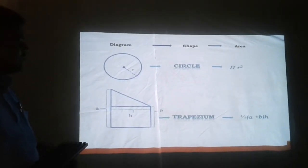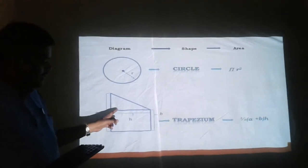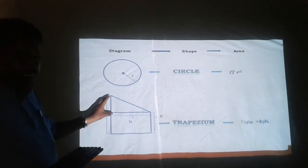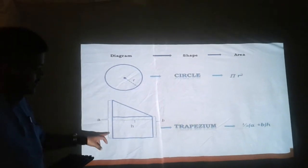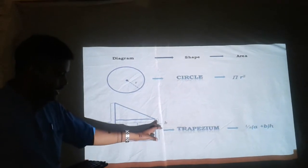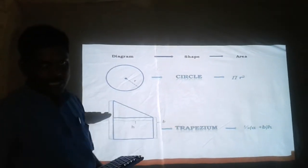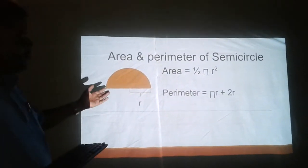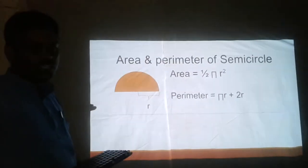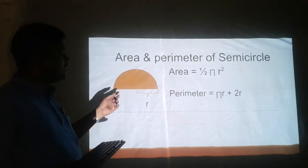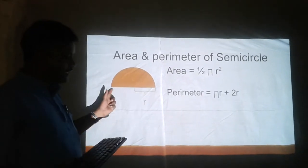Now let's revise these two things again. The circle has the formula for area: pi r squared. The trapezium consists of one rectangle and a triangle. We can easily find its formula for area: one-half into (a plus b) into h. Here, a and b are the two parallel sides, and the addition of the two parallel sides into the height into one-half gives the area. From the formula for area of circle, we can find the area of a semicircle: one-half into pi r squared. The perimeter of the semicircle comes to pi r plus 2r, where 2r is the diameter of the semicircle.